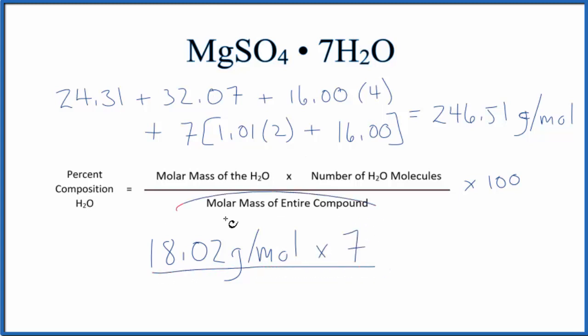the molar mass of the entire compound, which we just found. We multiply that by 100 to get a percent. Notice that grams per mole on the top and bottom cancel out. We end up with 51.17 percent.